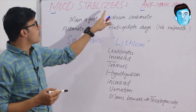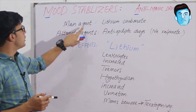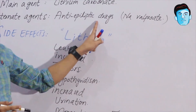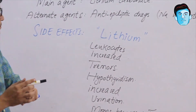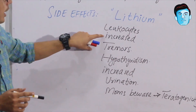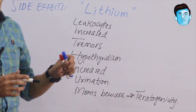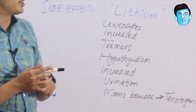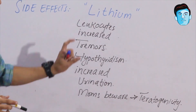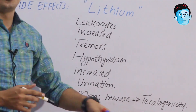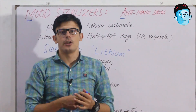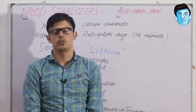To recap: mood stabilizers are anti-manic drugs. M stands for the main agent — lithium carbonate — and A stands for alternative agents, which are anti-epileptic drugs, specifically sodium valproate. For side effects using LITHIUM: L = leukocytosis, I = increased, T = tremors, H = hypothyroidism, I+U = increased urination, M = moms be aware due to teratogenicity. I hope you liked the video — please subscribe and share. Thank you.